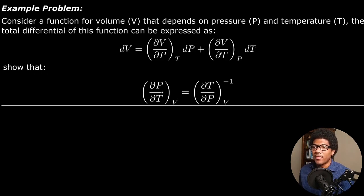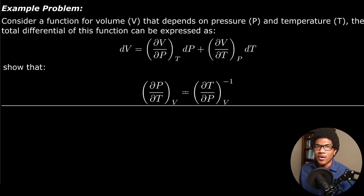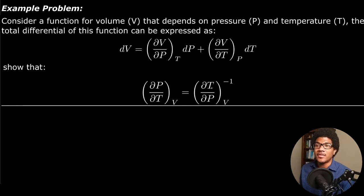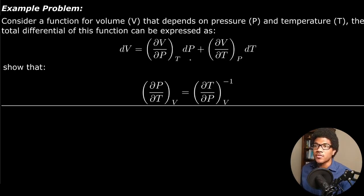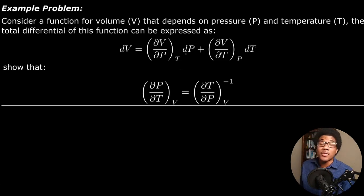It wants us to show that this expression is true. If you've never solved a problem like this, these are basically what we call mathematical proofs. What you want to do is explicitly show that the left-hand side is equal to the right-hand side. And if you're doing a proof, it has to be general. So we're not going to assume that we're dealing with an ideal gas — we want to actually prove that this is true, working only with this total differential expression.